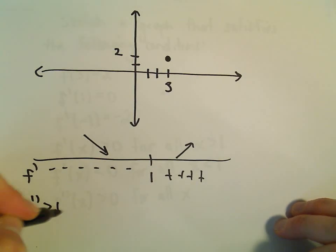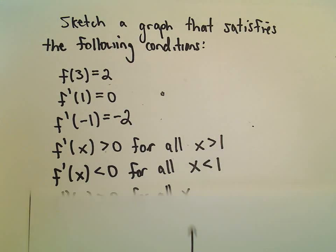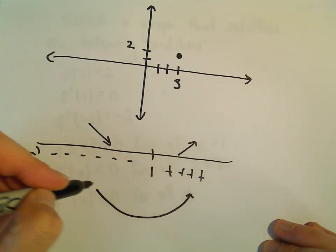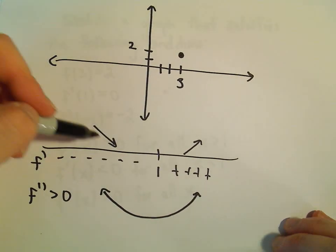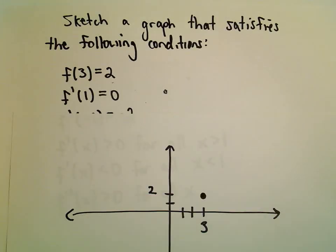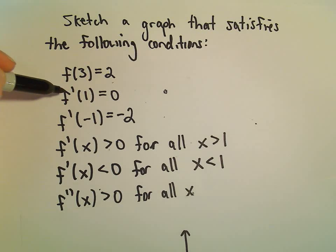The second derivative is greater than 0 for all x, which means it's concave up everywhere. Based on that, I'm thinking a graph kind of like a parabola would work here.